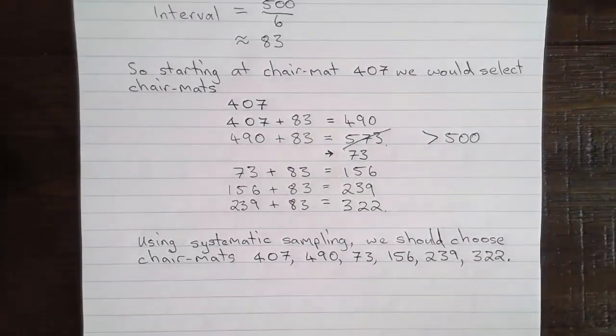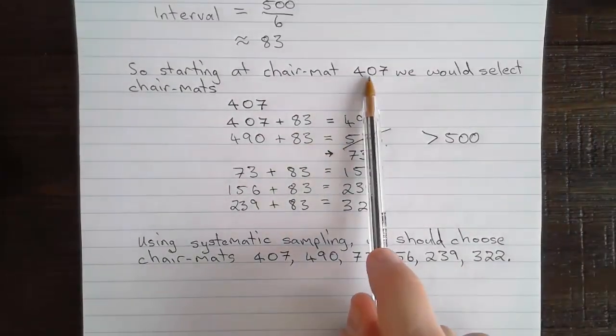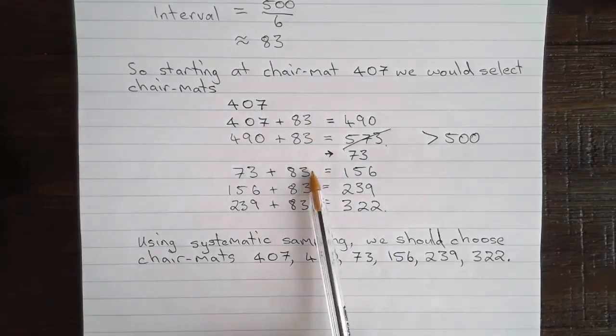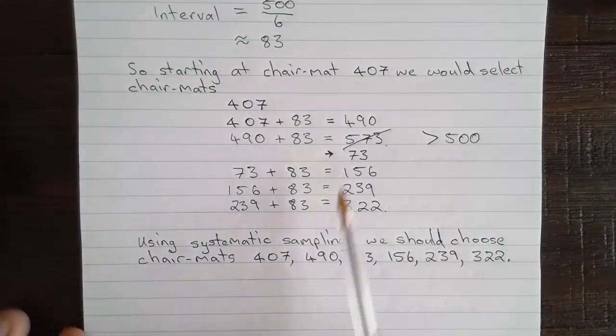And then, starting at chair mat 407, as indicated in the question, we just moved along the list by that regular interval size. The only little complication being, when we move beyond the size of our population, we need to loop back to the start of our list.